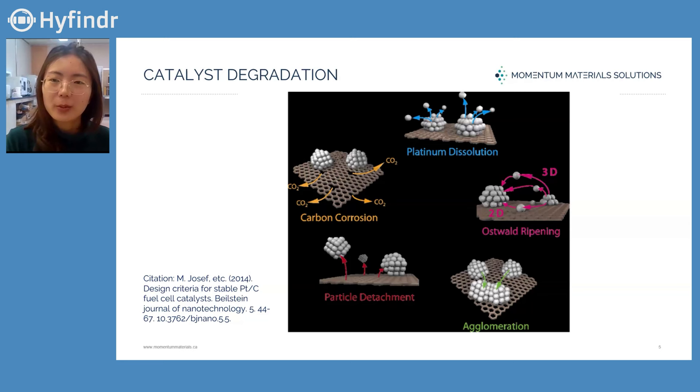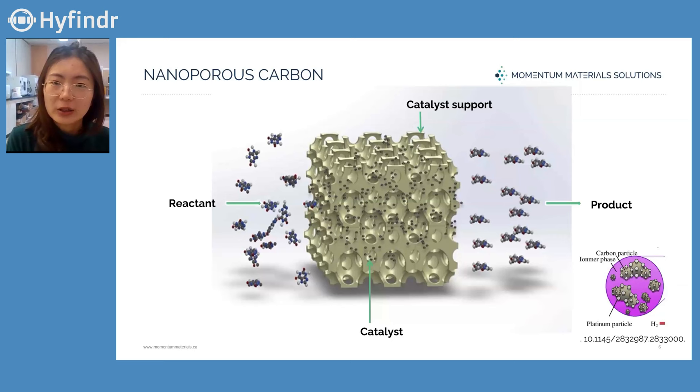What can one do to alleviate these effects or prevent this from happening? A lot of approaches have been tried in order to mitigate degradation within the catalyst layer, either from the system level or from the materials level. At Momentum Materials, we are trying to solve those challenges from the material level. That's why we are developing a nanoporous carbon material as a support material in order to mitigate the degradation mechanisms.